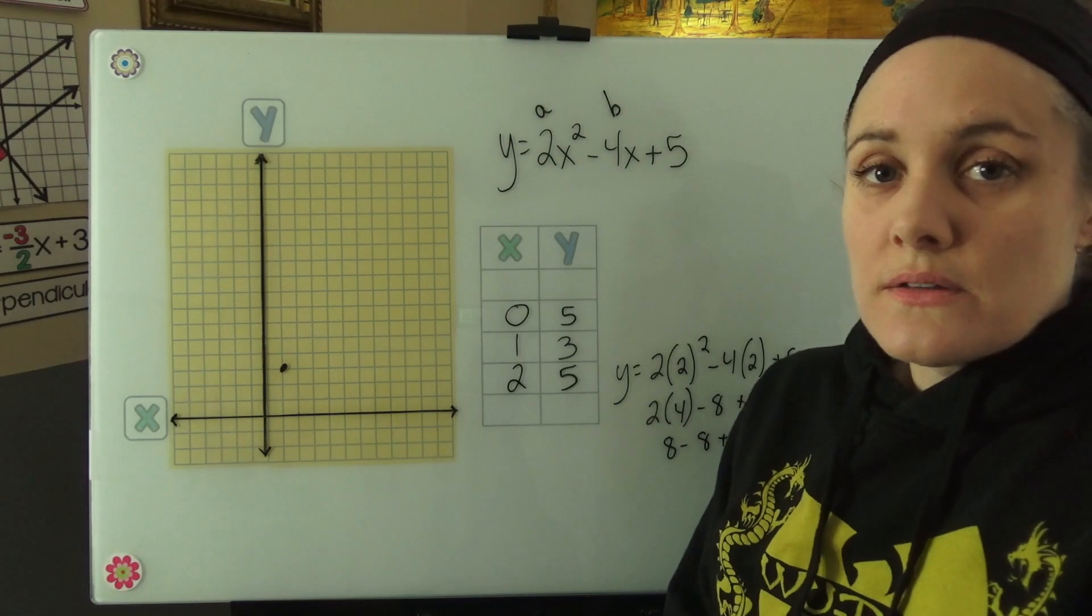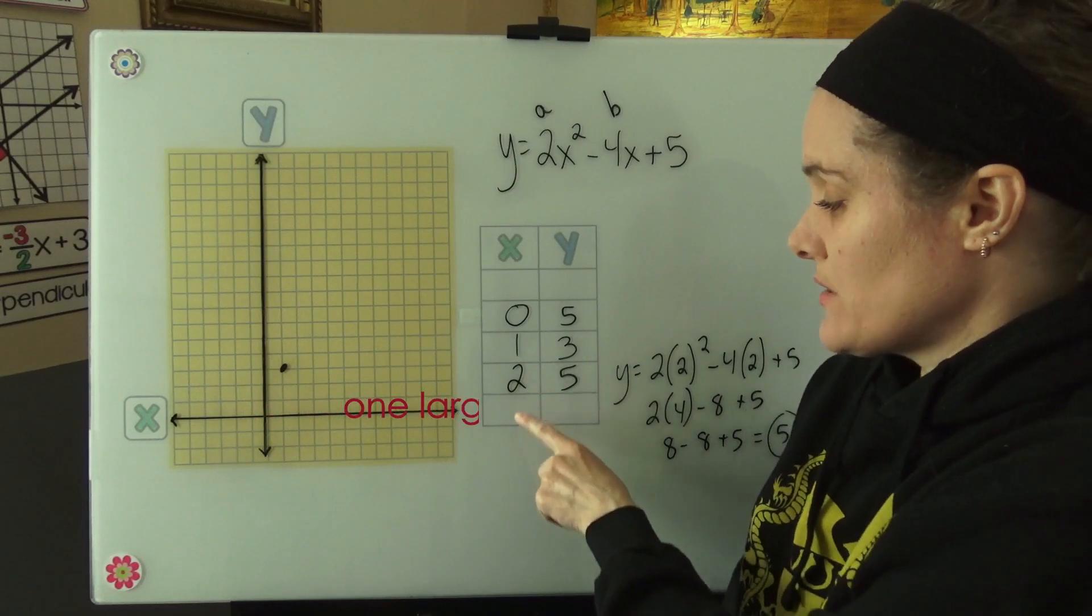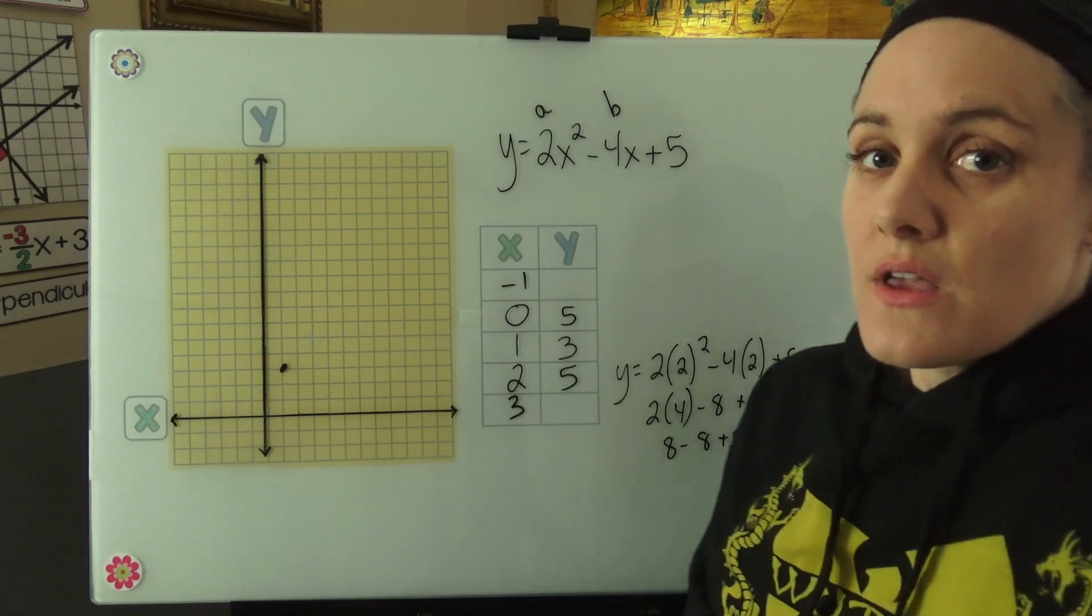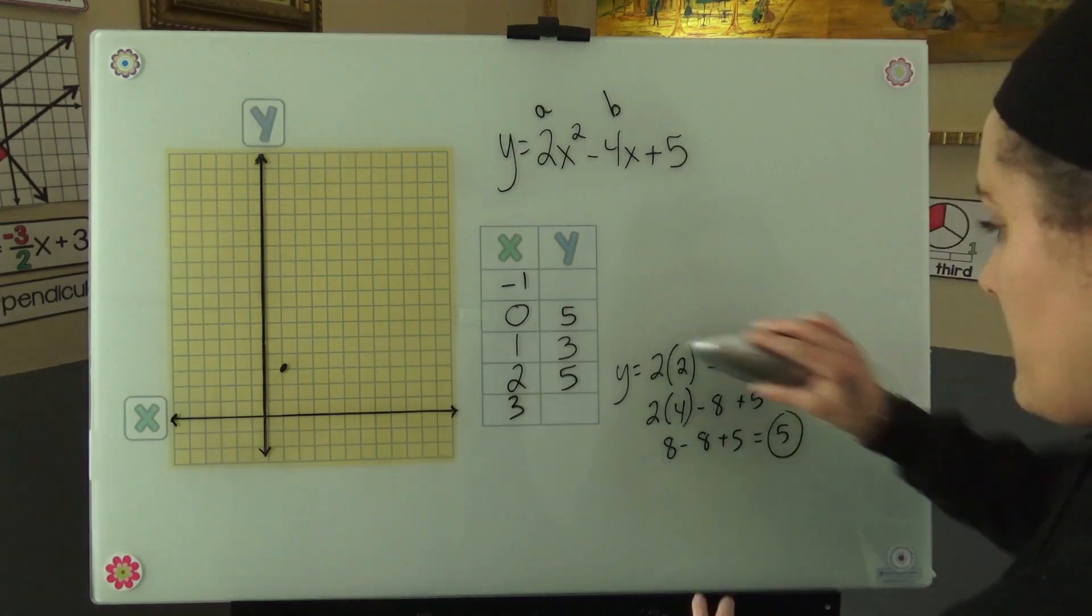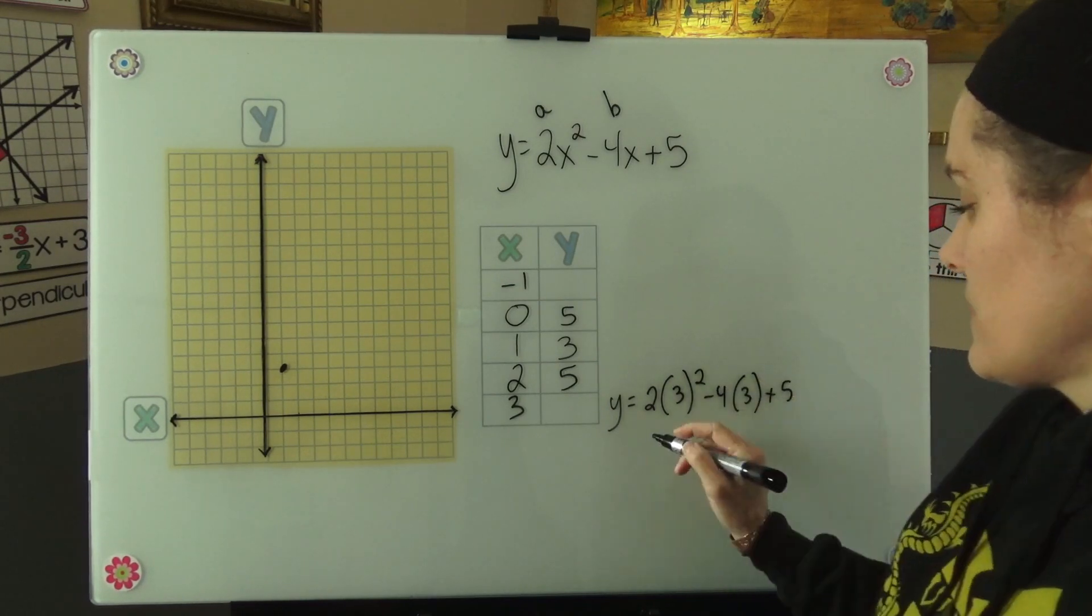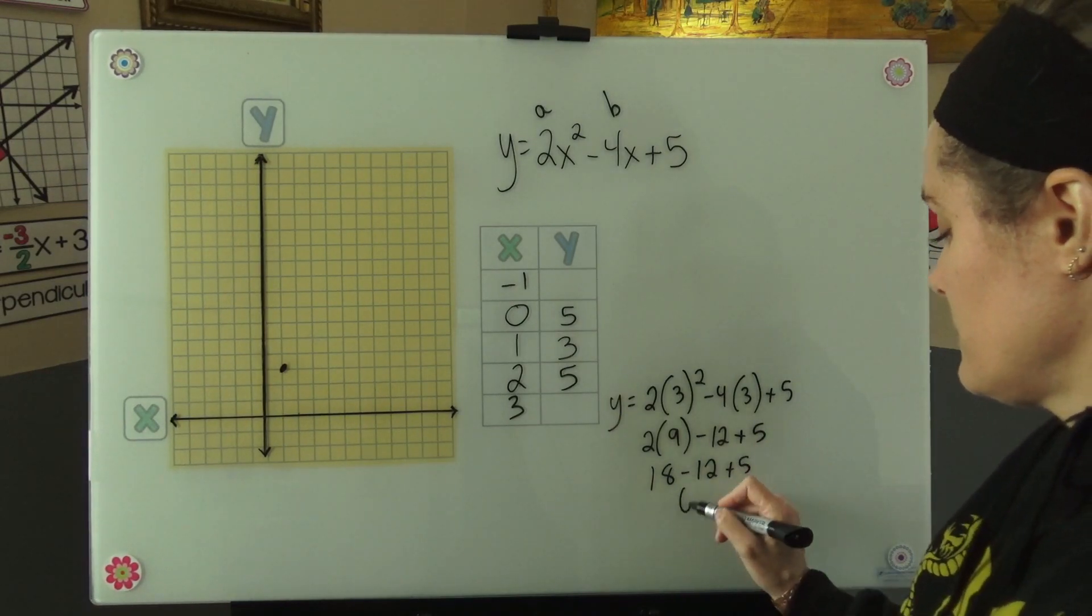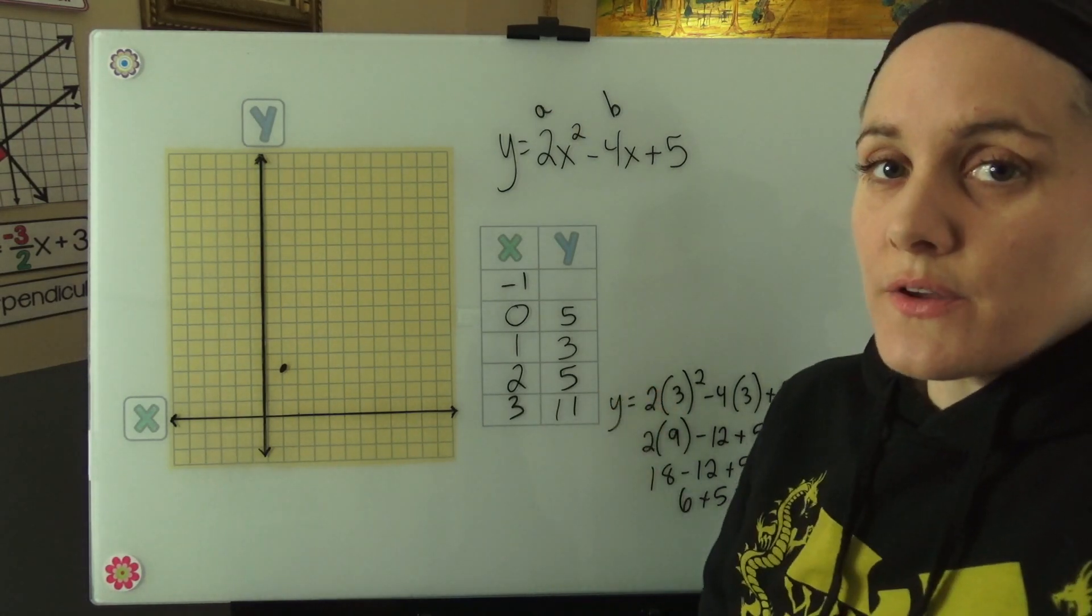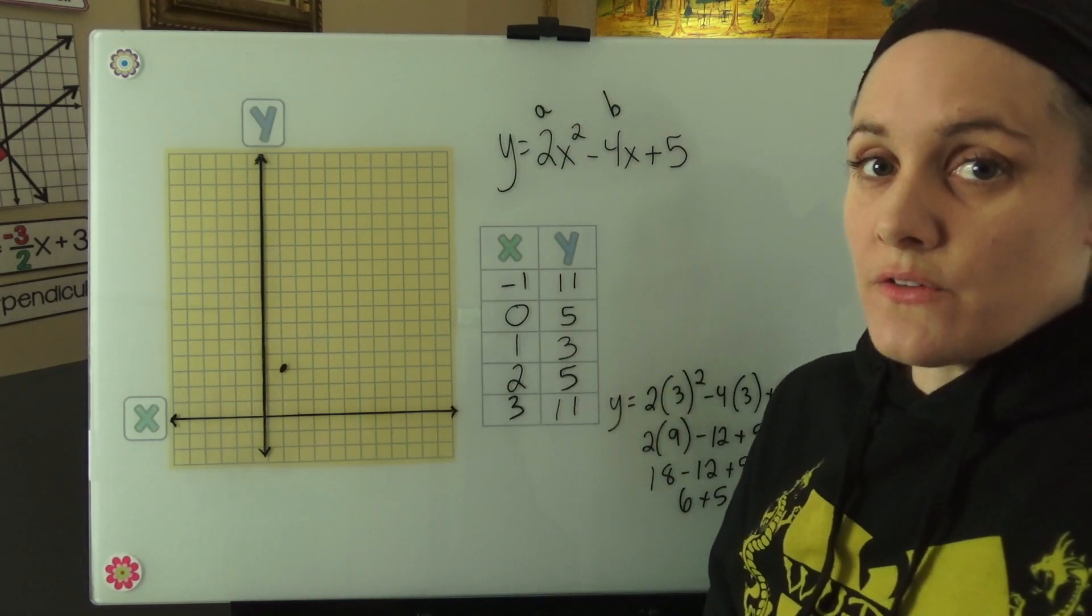Cool, it is the same. Now I want to choose two more points: one x value one smaller than 0, and one x value one larger than 2. Now these will be the same y values also, so I'm just going to choose one, and I think I can trust myself on this one. My y value at 3 is 11, so my y value at negative 1 should also be 11.